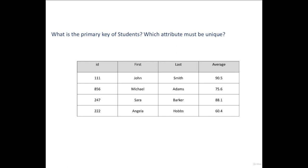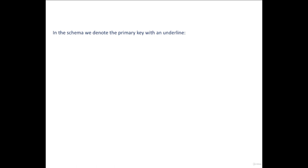Two different rows must therefore differ at least in their primary key values. For example, looking at the student table — what is the primary key? It's easy to understand that no two students have the same ID. The other attributes — first name, last name, and average — can be duplicated. We can imagine two students with the same first name, last name, or even the same average. But the ID must be unique. In the schema, we denote the primary key with an underline — for example, in the students schema, the ID column is underlined.